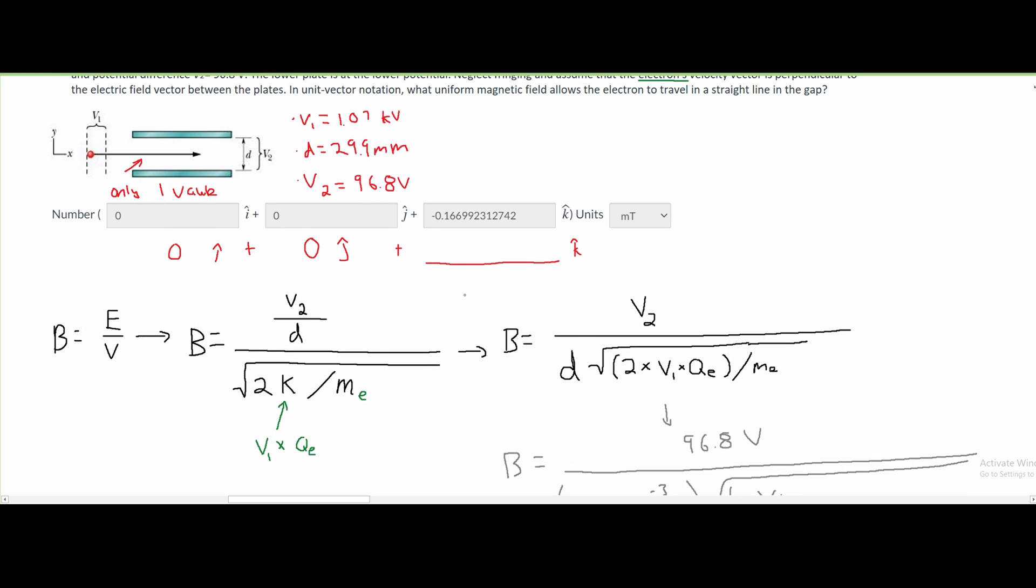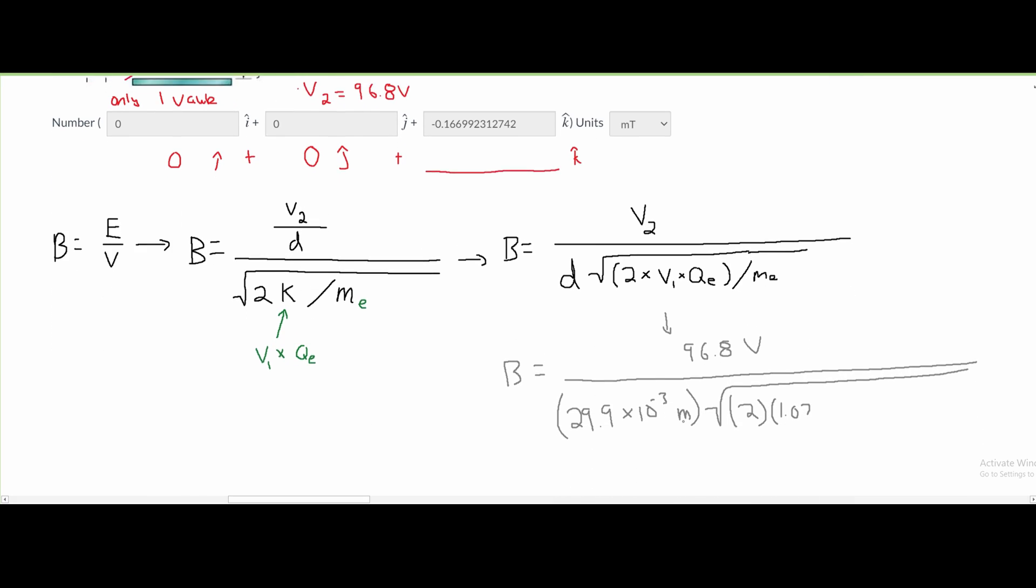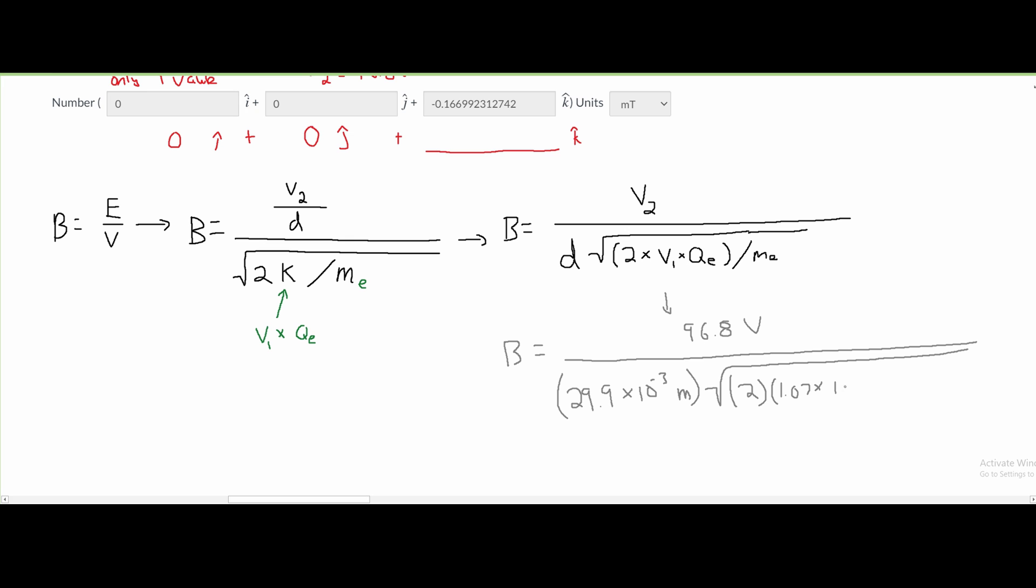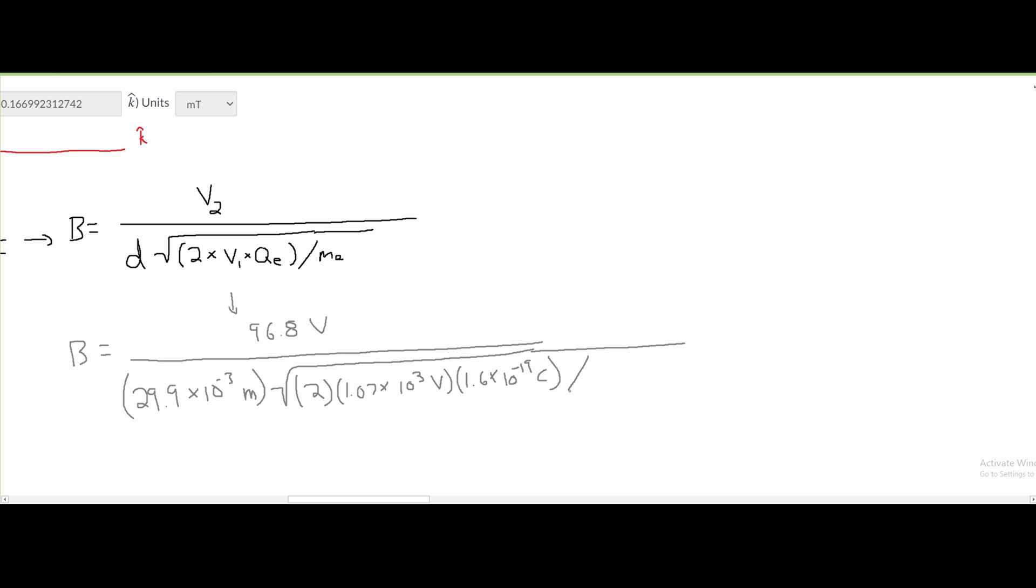And here it's kV, we need to make it just volts, so we have to multiply it by 10 to the 3, and we're going to get volts. Then we need the charge of an electron, which is 1.6 times 10 to the negative 19 coulombs approximately. All of this is being divided by the mass of the electron, which is 9.11 times 10 to the negative 31 kilograms.